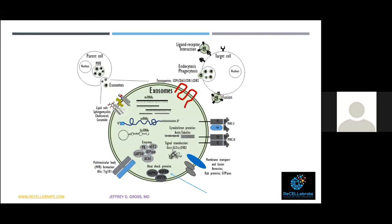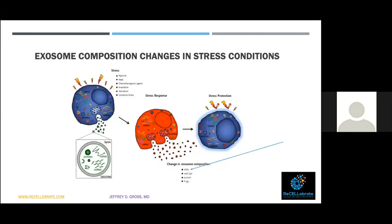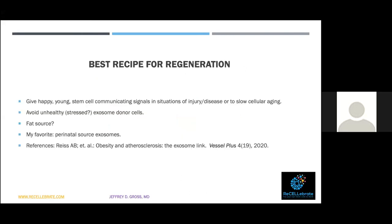Exosomes contain heat shock proteins — these preserved, important, primitive proteins that get things going. A cell under a stress response changes what types of heat shock proteins it presents. We're learning more about this, and eventually we will know which combination and balance produces the proper gene transcription, protein synthesis, and activity in the cell.